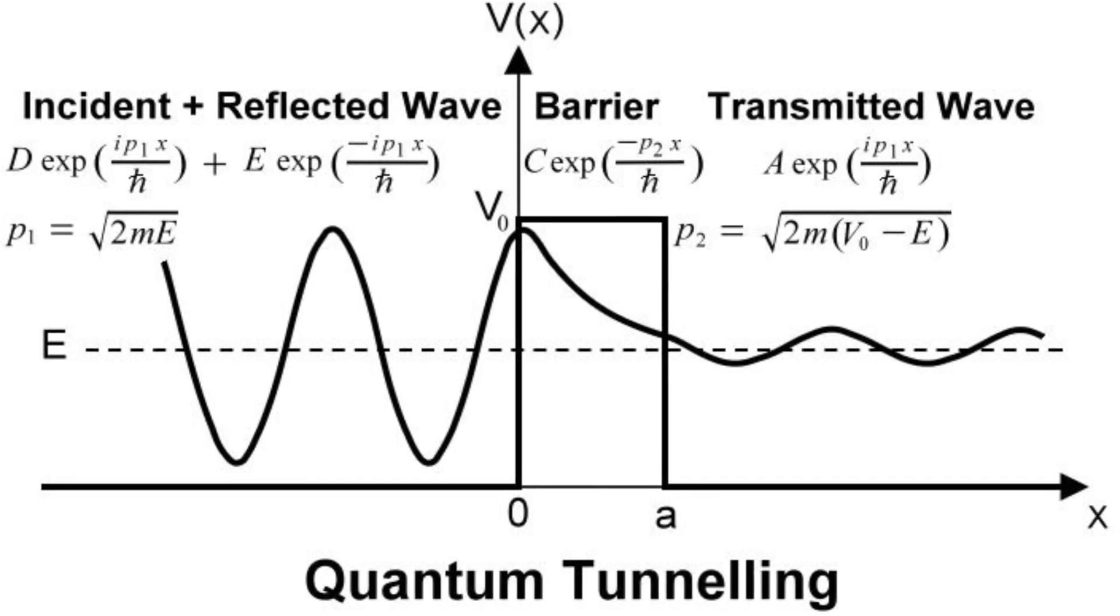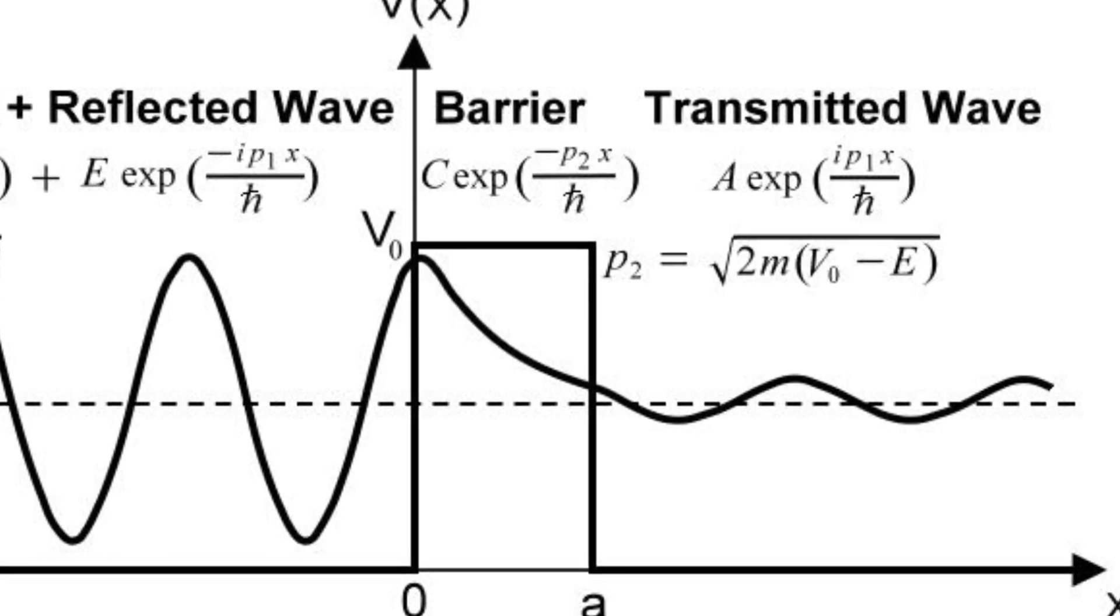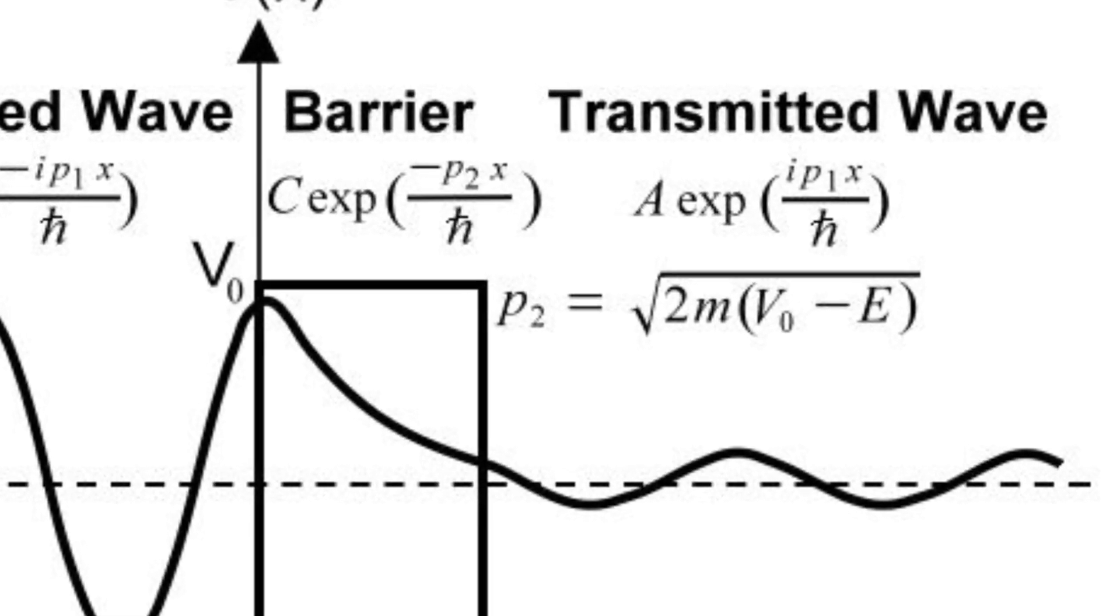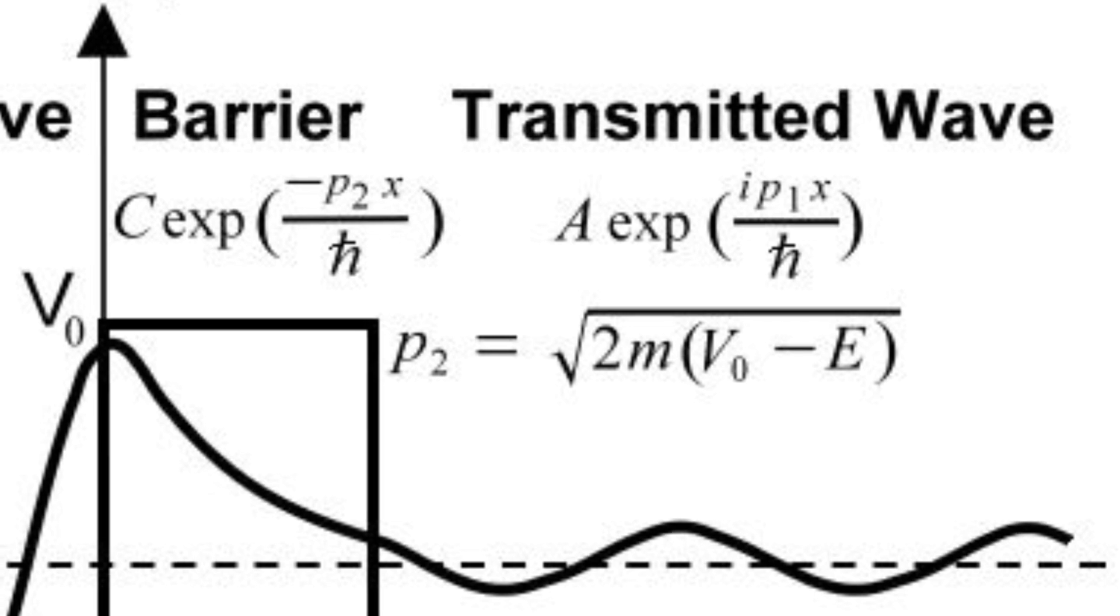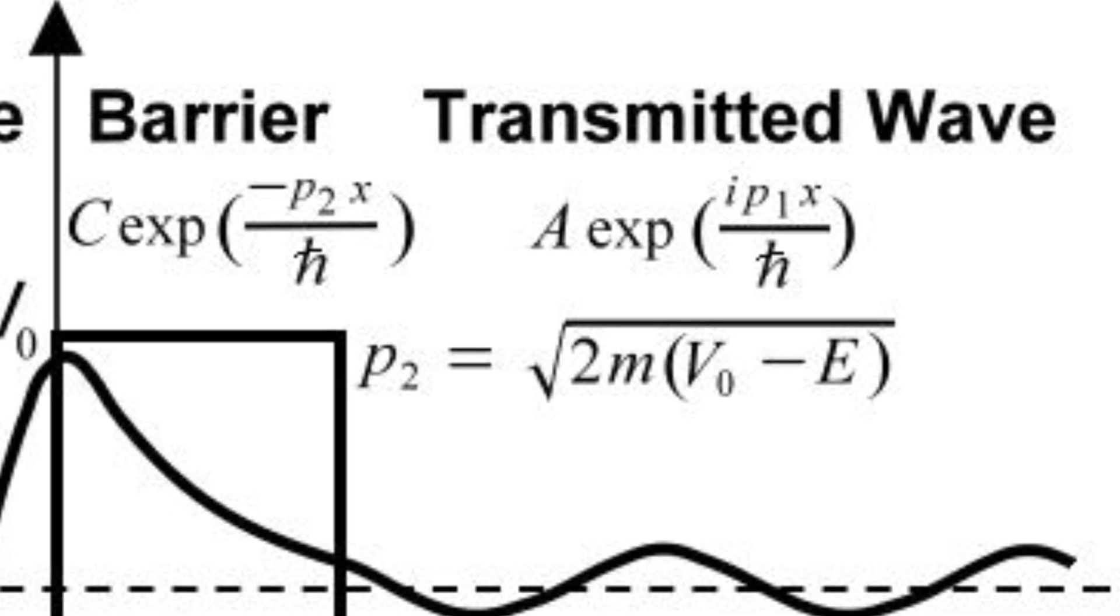Their groundbreaking calculations redefined what we thought was possible, showing that what appeared to be an impenetrable wall was actually a leaky boundary at the quantum level. This discovery not only explained radioactive decay in a new light, but also set the stage for a profound shift in our understanding of nature.